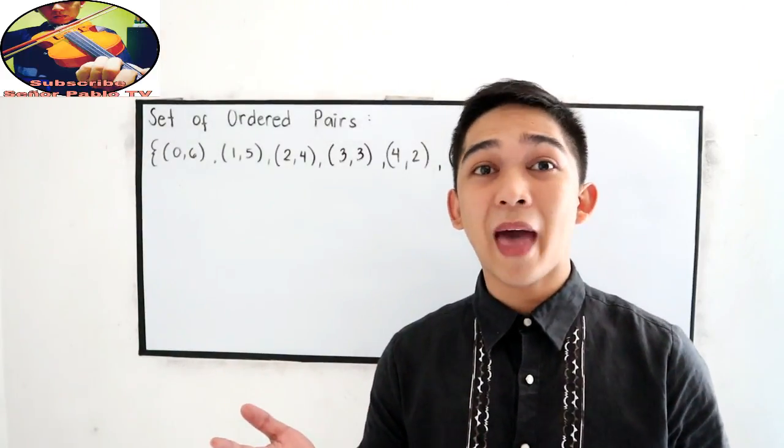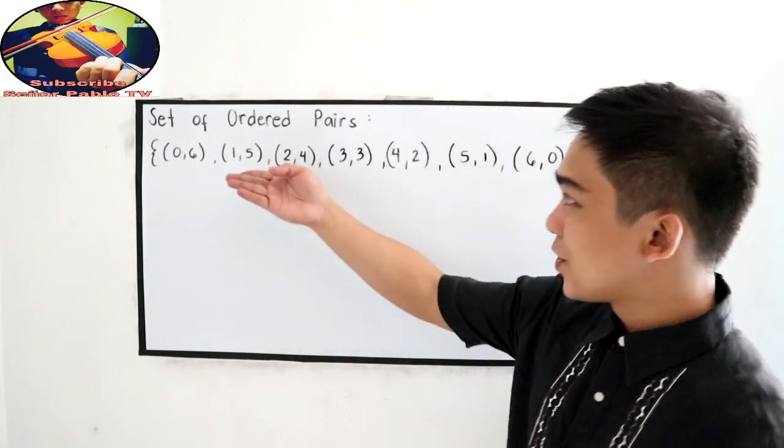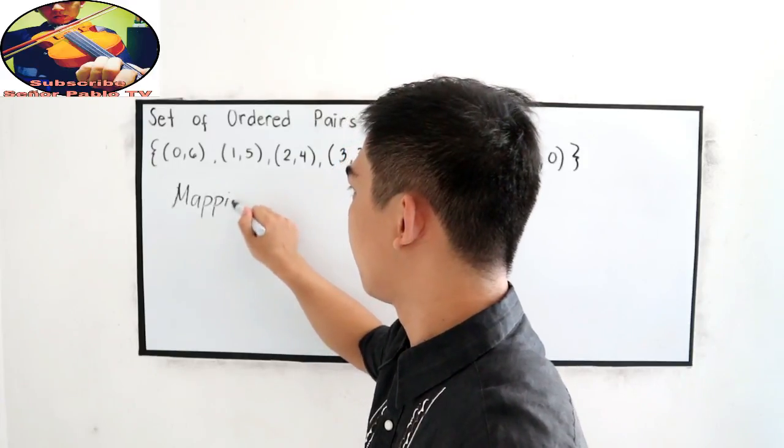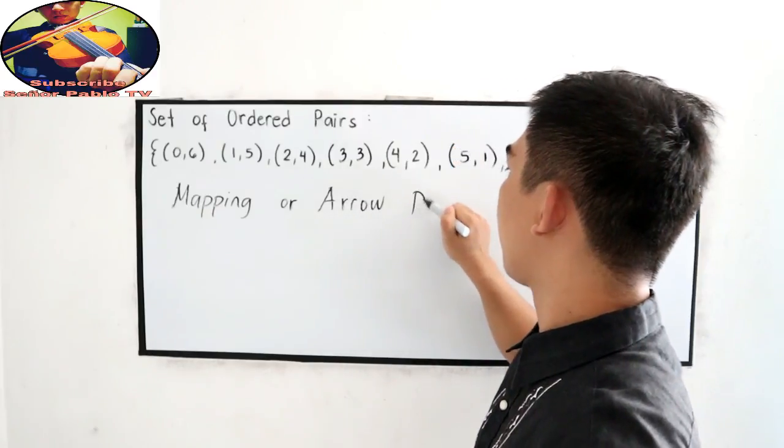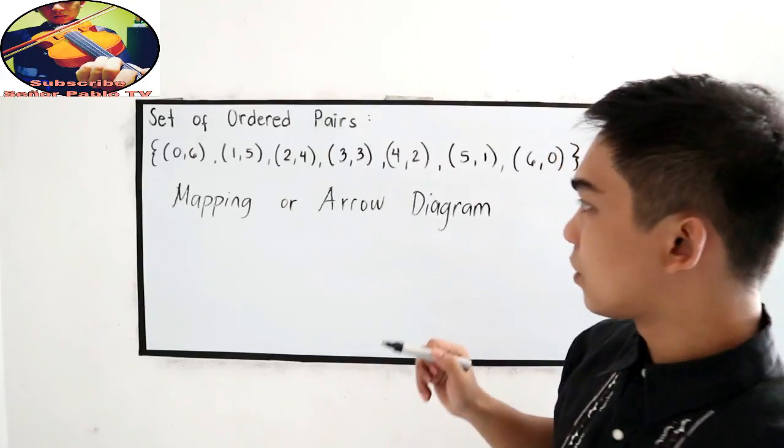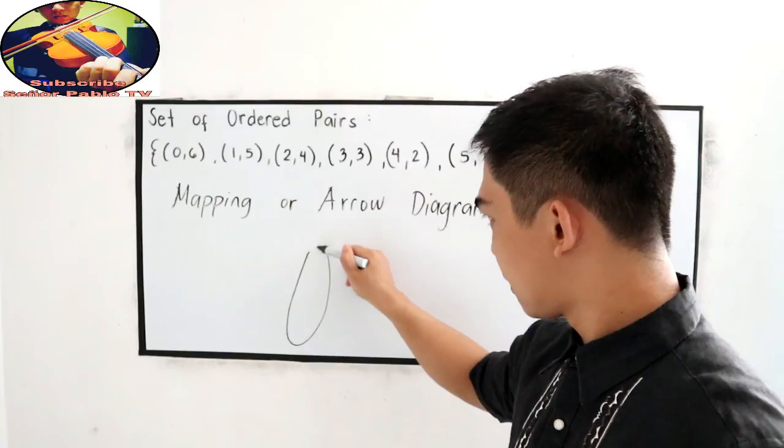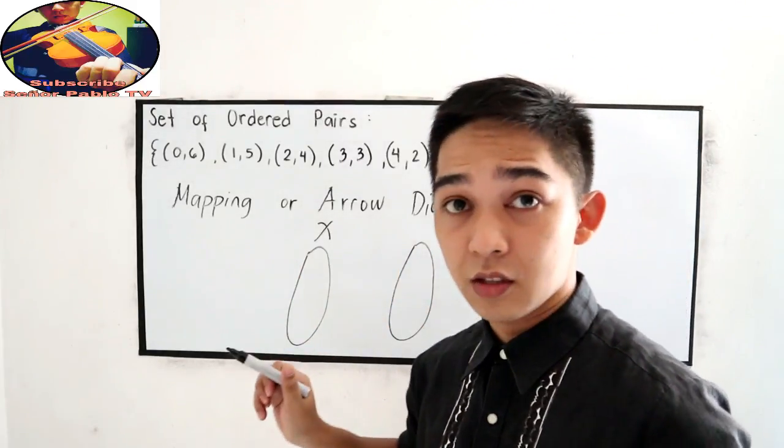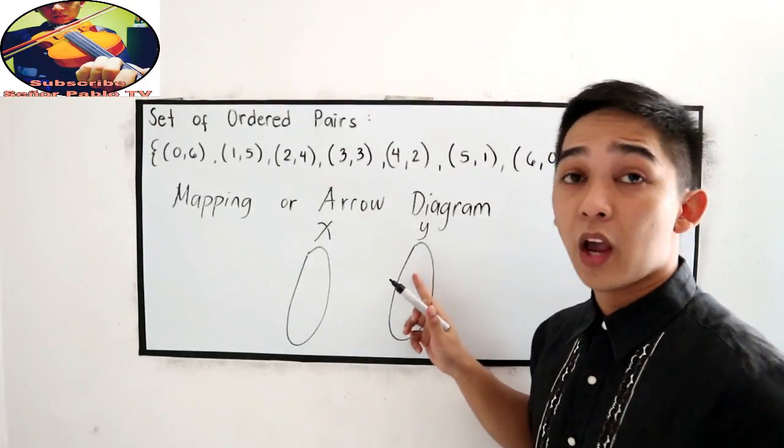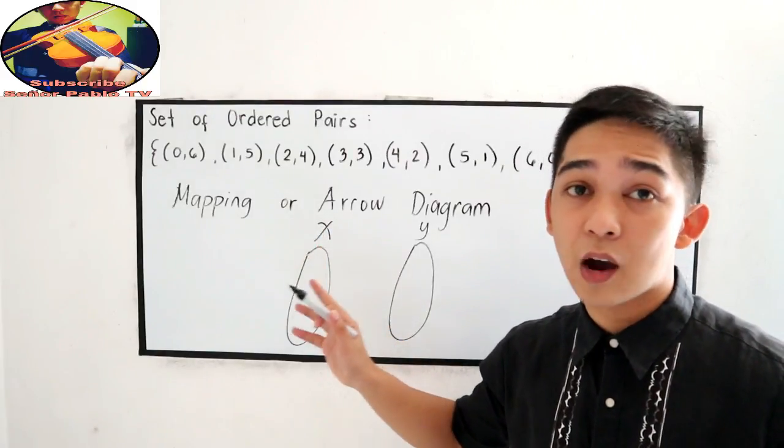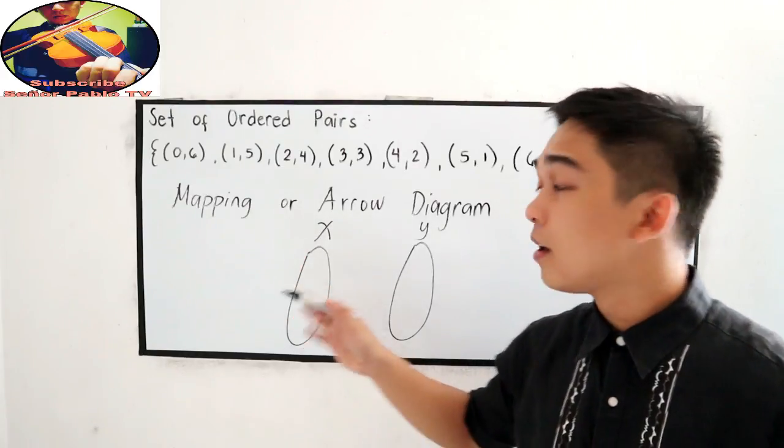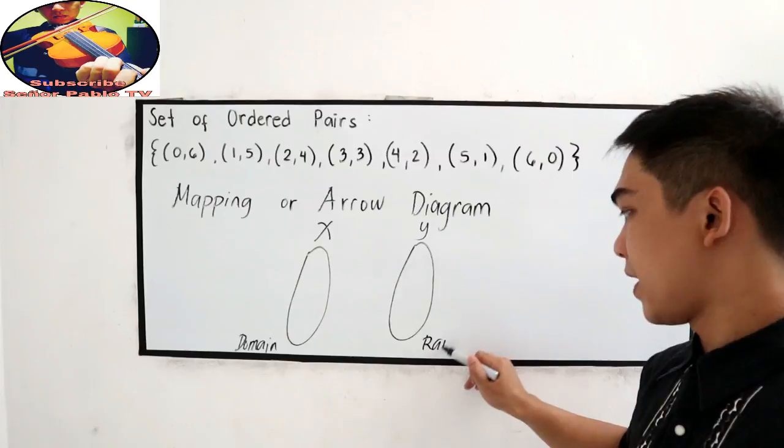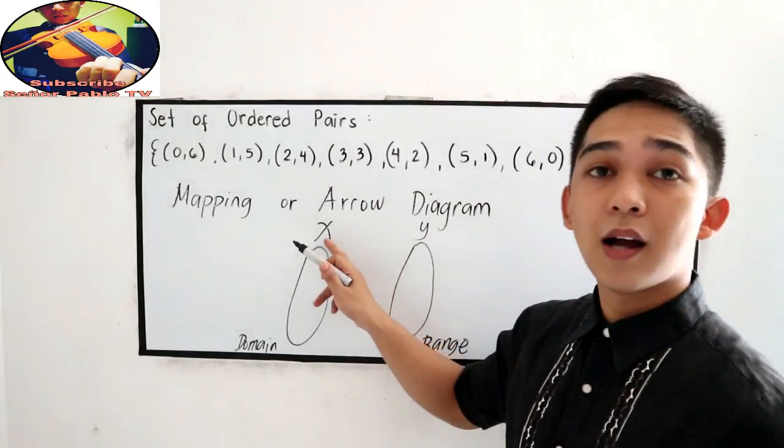The other way is the mapping or arrow diagram. Using our ordered pairs, let us write it using the mapping or arrow diagram. In this case, we have a diagram which is on the left side. We can call it as our x-coordinate and our y or the y-coordinates. Take note, our abscissa is also known as our domain or the value of the x, and y-coordinates will be our range.